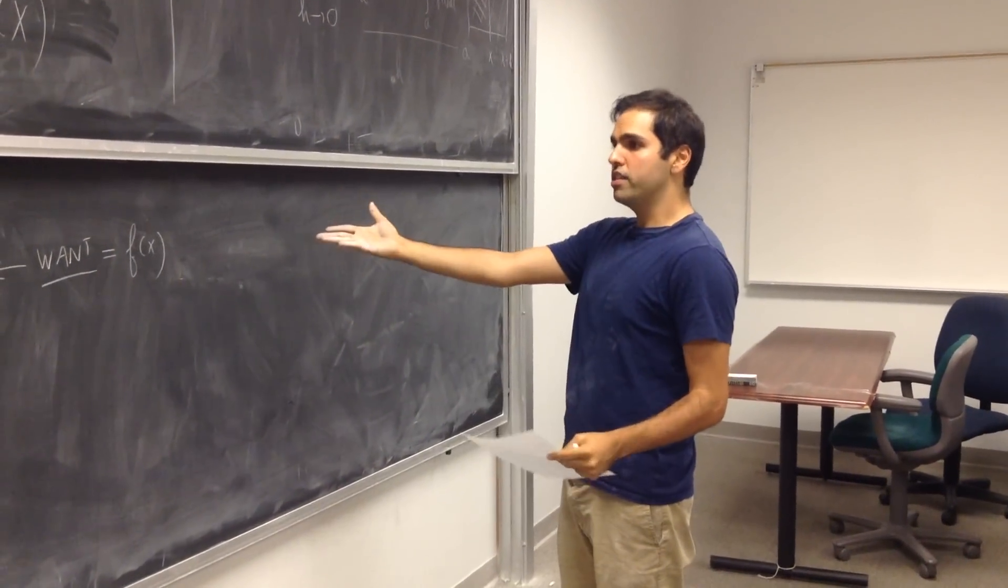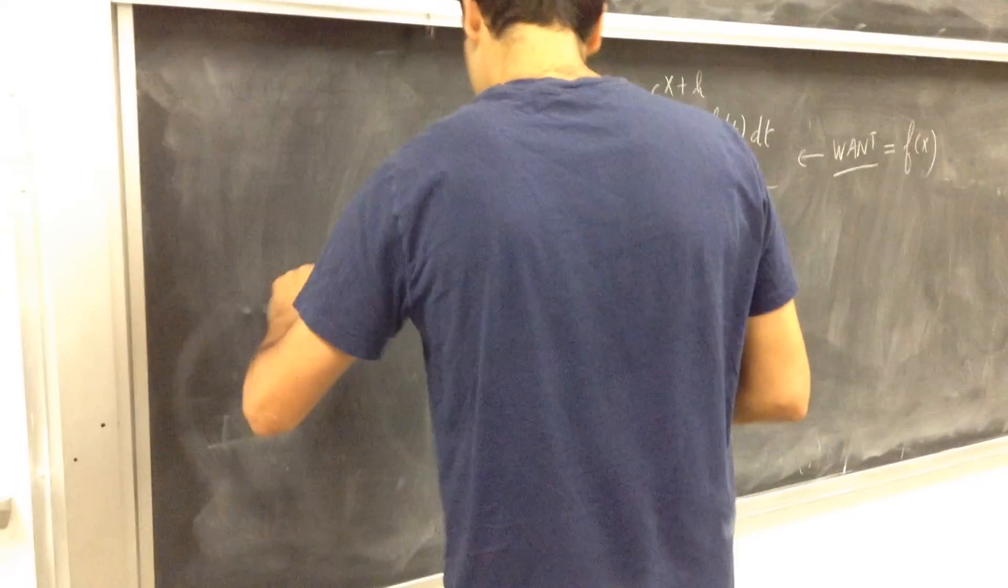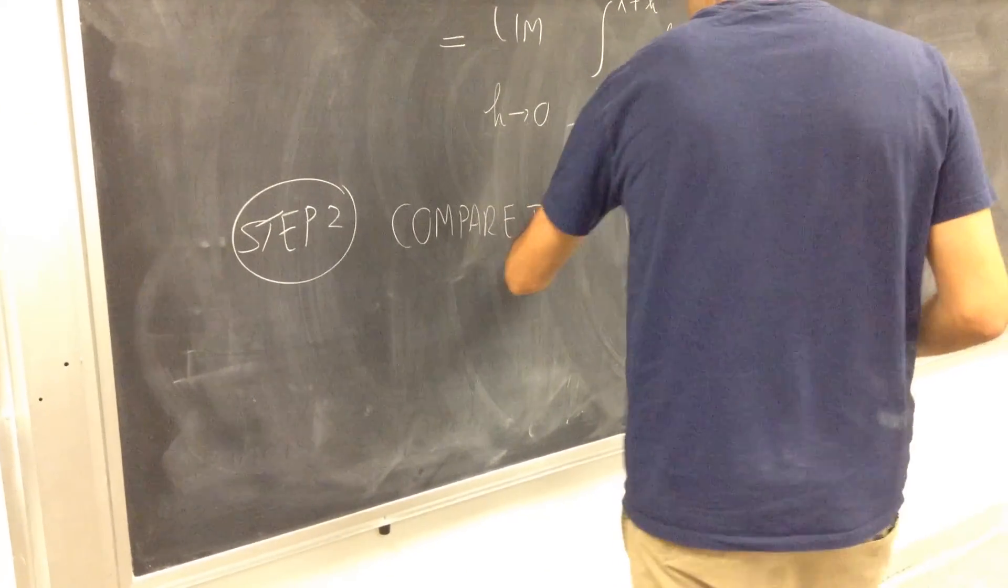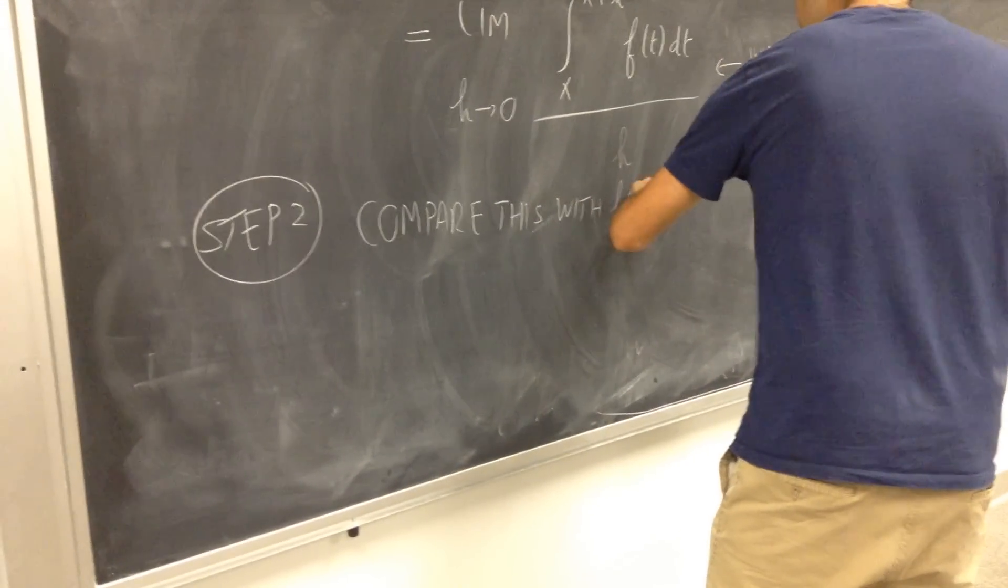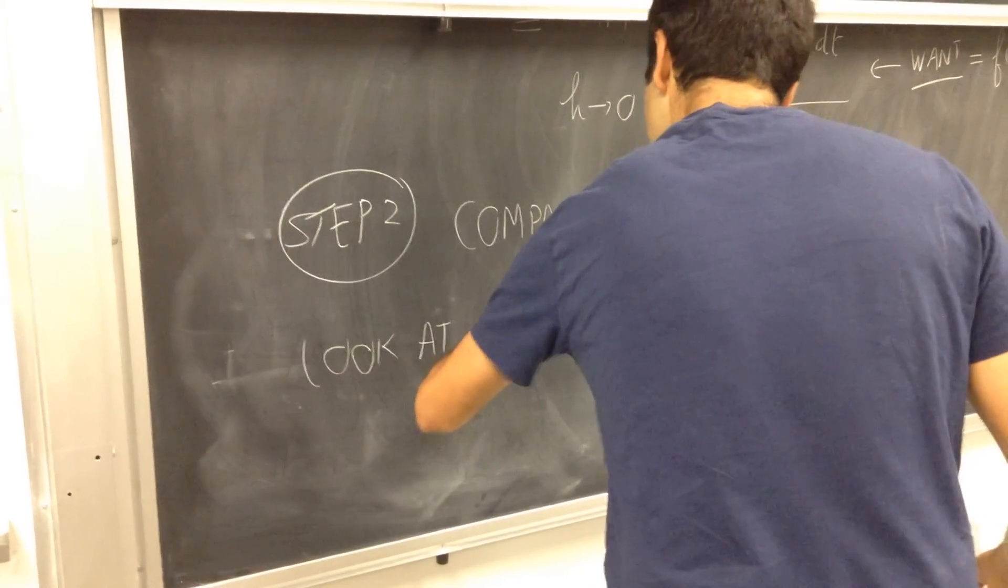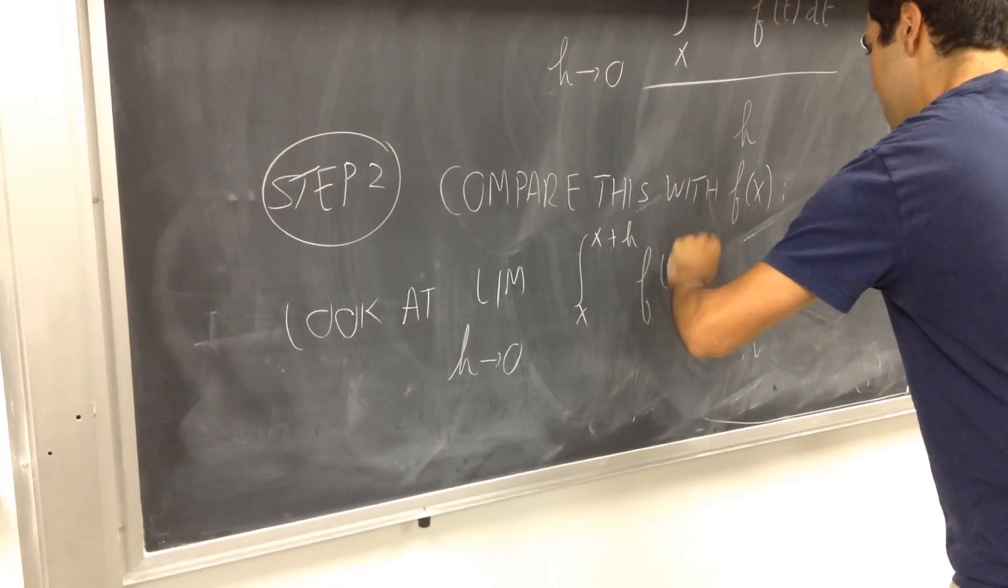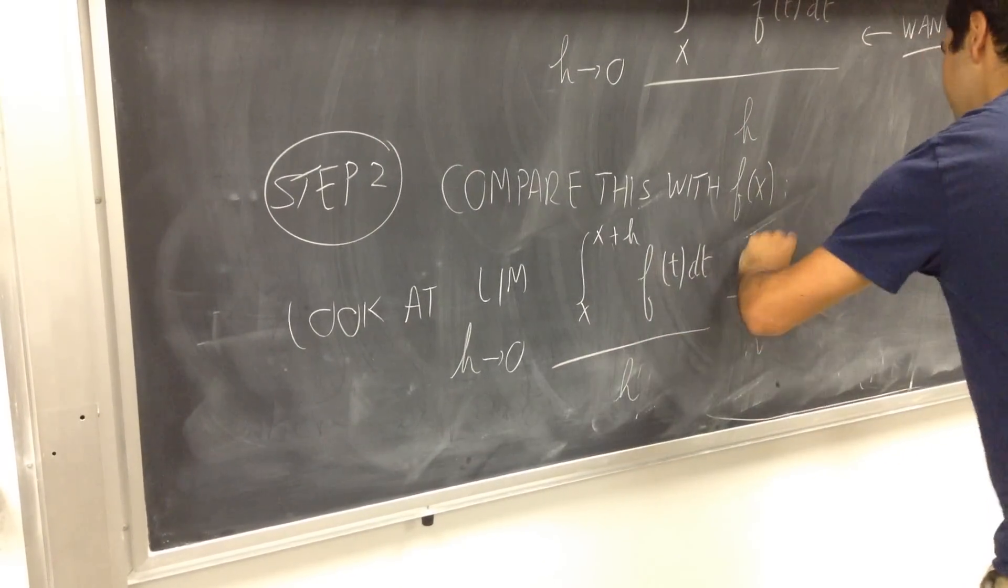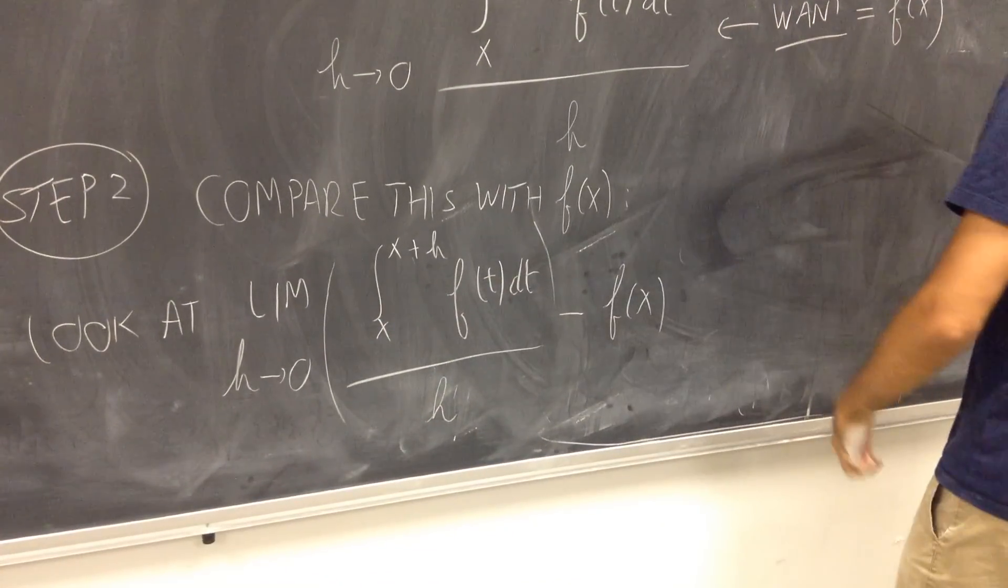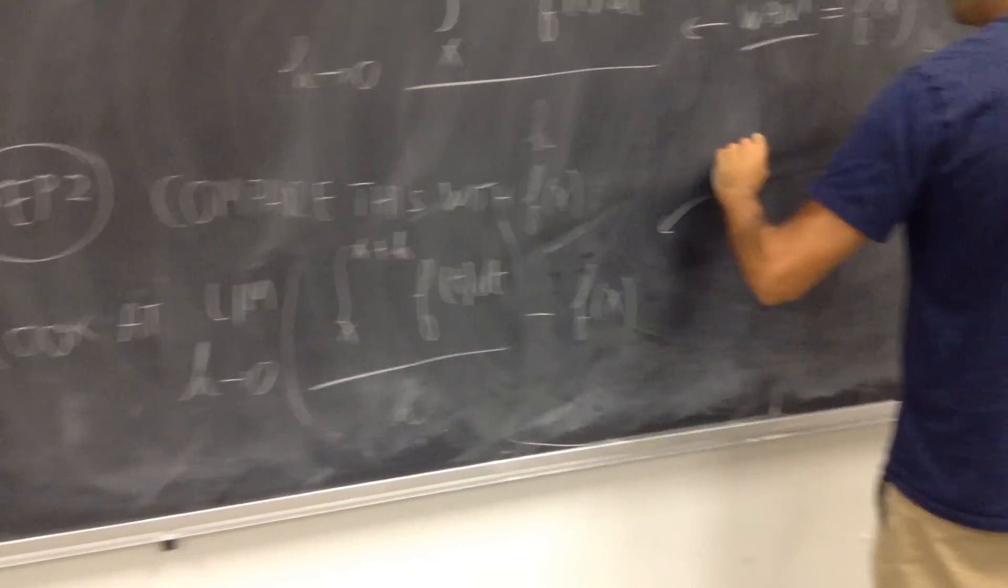So what you, in the end, what you're left with is the integral from x to x plus h of f of t dt. So that's equal to the limit of h goes to zero, of integral from x to x plus h, f of t dt over h. The thing is, again, remember our goal is we want this to be equal to f of x.